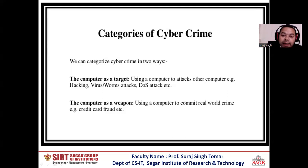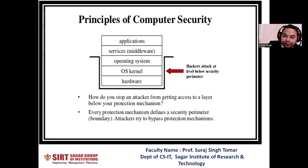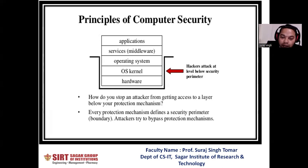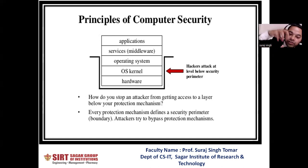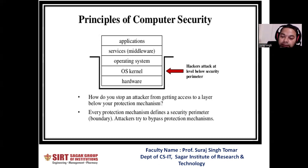The second category is the computer as a weapon: using a computer to commit real-world crime. Example: credit card fraud. Now, the parameters of computer security — hackers attack at a level below security parameters. These parameters include application service, media layer, operating system, OS kernel, and hardware. How do you stop an attacker from getting access to a layer below your protection mechanism? Every protection mechanism defines the security parameters. Boundary attackers try to bypass the protection mechanism.